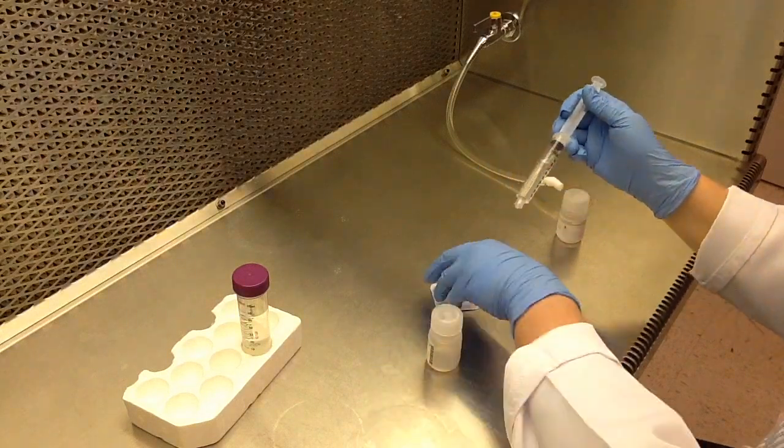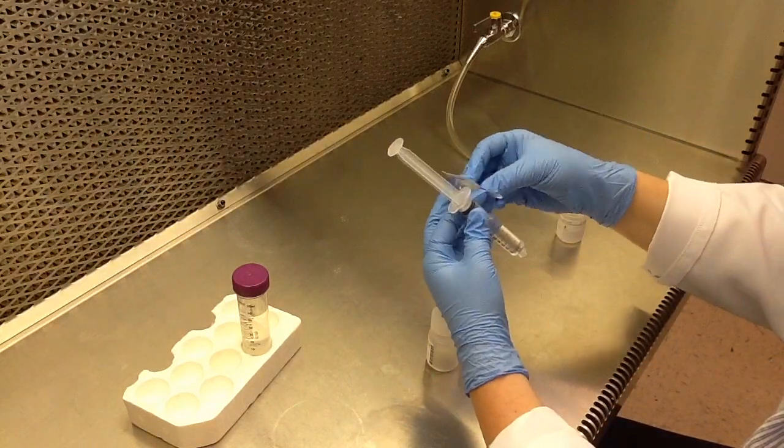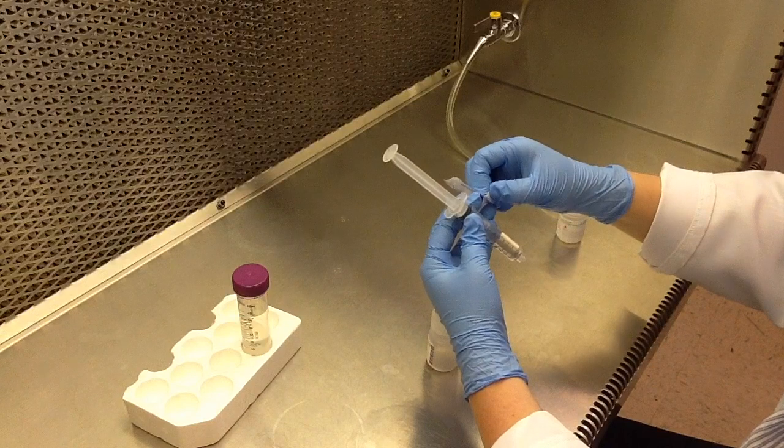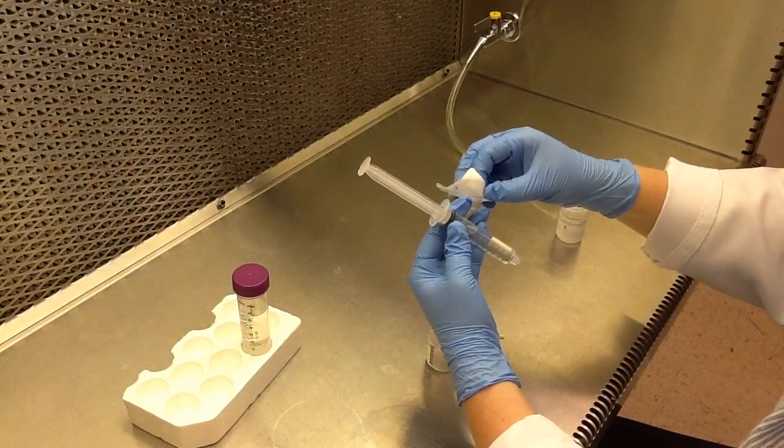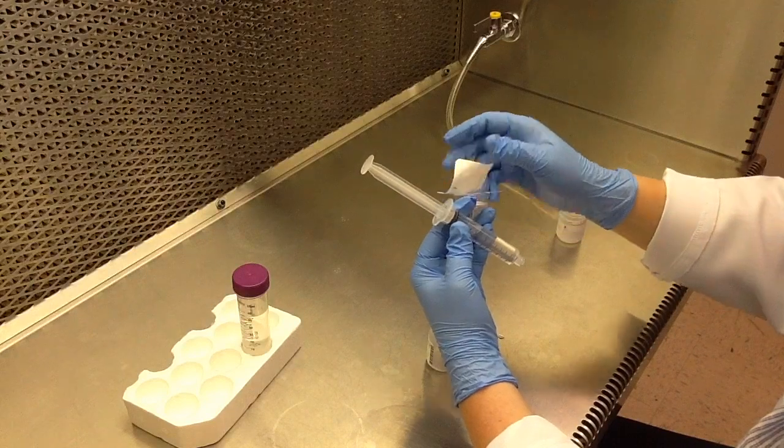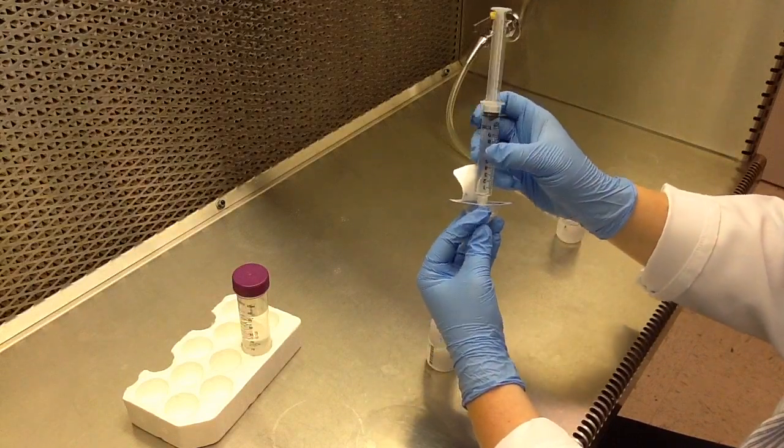Carefully remove the top of the sterile filter packaging. Do not touch the bottom side of the filter as you will risk contaminating your stock solution. Use the packaging to help you screw it on. Screw the tip of the syringe into the filter.